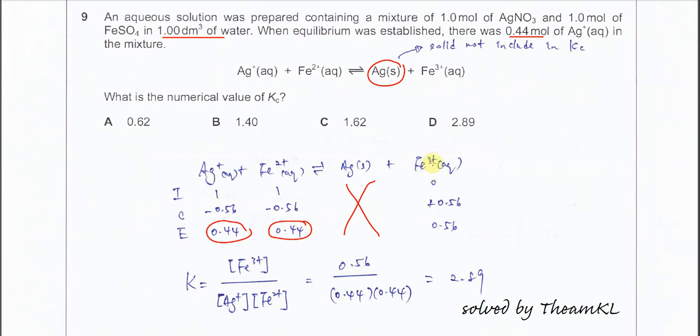So the Fe3+ you need to plus 0.56, so at equilibrium the Fe3+ is 0.56.